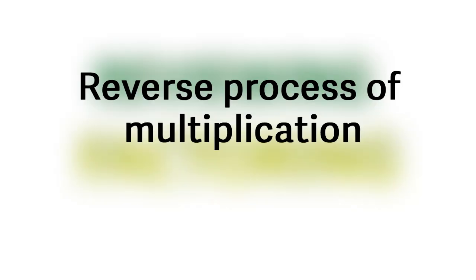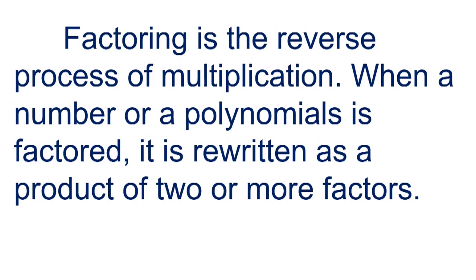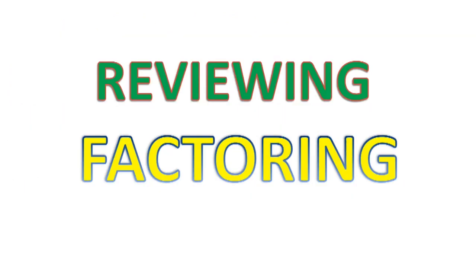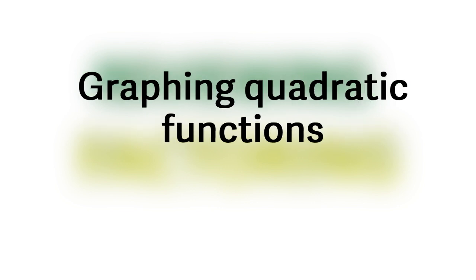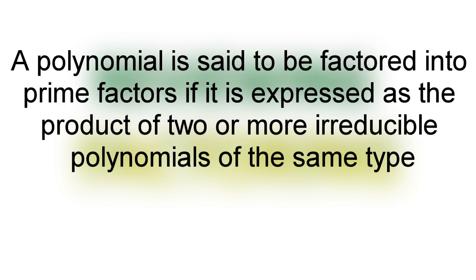Factoring is the reverse process of multiplication. When a number or a polynomial is factored, it is rewritten as a product of two or more factors. Factoring is the technique used in solving quadratic equations, simplifying rational expressions, and graphing quadratic functions. A polynomial is said to be factored into prime factors if it is expressed as a product of two or more irreducible polynomials of the same type.